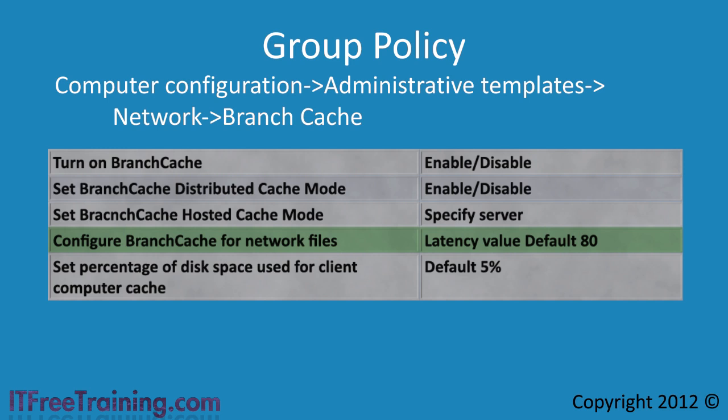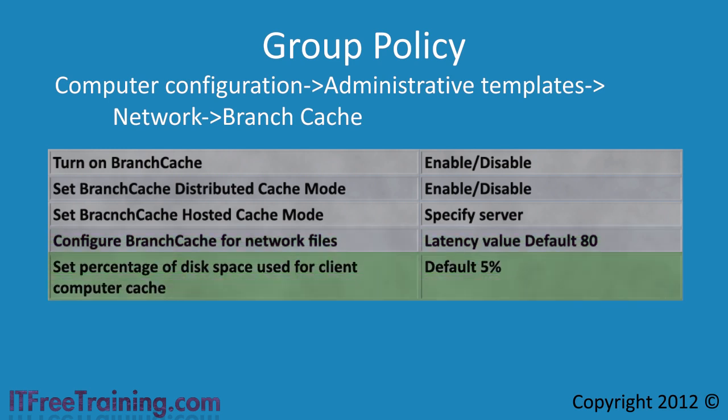The last setting, Set Percentage of Disk Space Used for Client Computer Cache, is the percentage of hard disk space that Branch Cache will use to store files. The default is 5%. This is worked out from the total hard disk space, not the available free space.